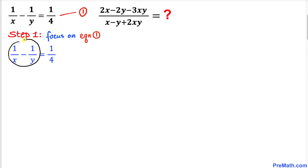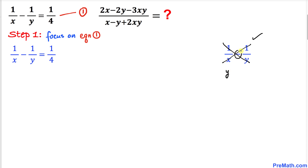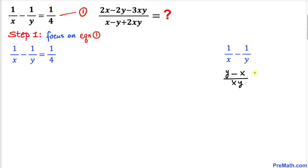Let's focus on the left hand side. I'll show you how we're going to simplify it. When subtracting these two fractions, we crisscross multiply: one times y gives y, minus one times x gives x, divided by x times y which becomes xy. So the left hand side simplifies to y minus x divided by xy.